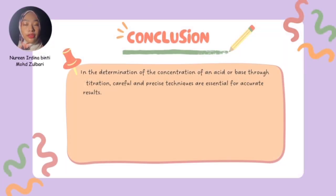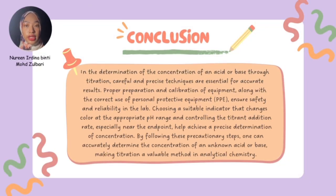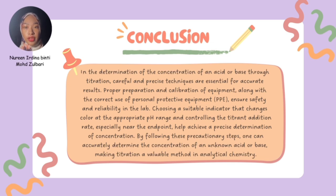To wrap up: in the determination of the concentration of an acid or base through titration, careful and precise techniques are essential for accurate results. Proper preparation and calibration of equipment, along with correct use of personal protective equipment (PPE), ensures safety and reliability in the lab. Choosing a suitable indicator that changes color at the appropriate pH range, and controlling the titrant addition rate especially near the endpoint, help achieve precise determination. By following these precautionary steps, one can accurately determine the concentration of an unknown acid or base, making titration a valuable method in analytical chemistry.